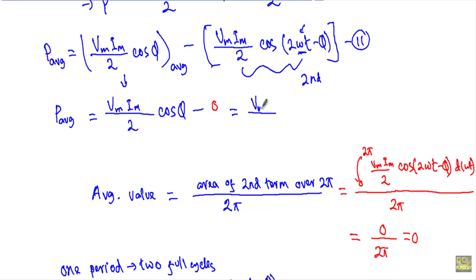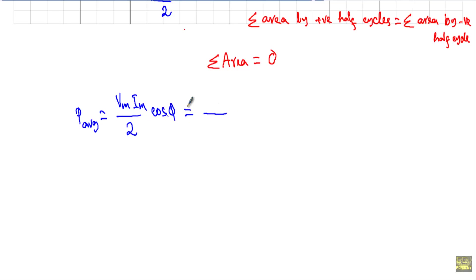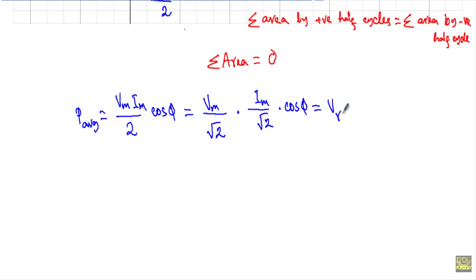So here I get P_avg equals Vm·Im/2 · cos(φ) minus 0, which equals Vm·Im/2 · cos(φ). The average power absorbed in the RL series circuit is Vm·Im/2 · cos(φ). I can write this as Vm/√2 · Im/√2 · cos(φ), where Vm/√2 and Im/√2 are the RMS values of voltage and current. Therefore, the average power equals Vrms × Irms × cos(φ). Thank you.